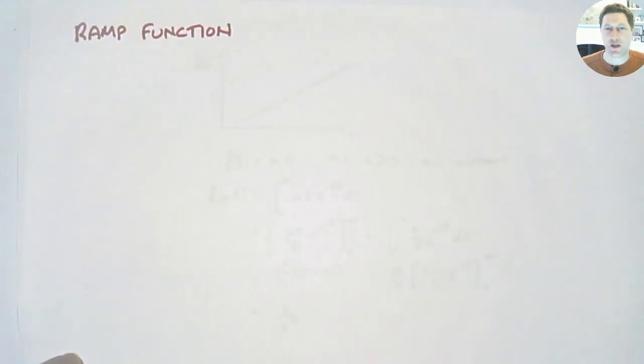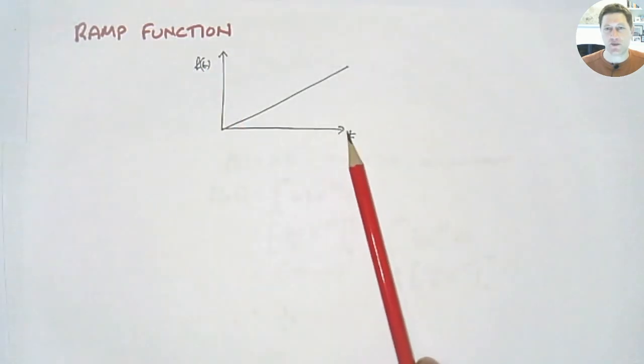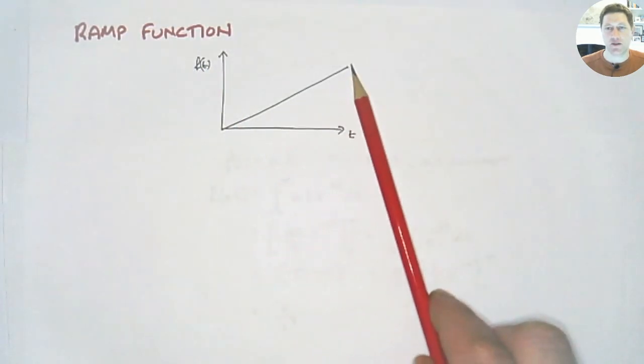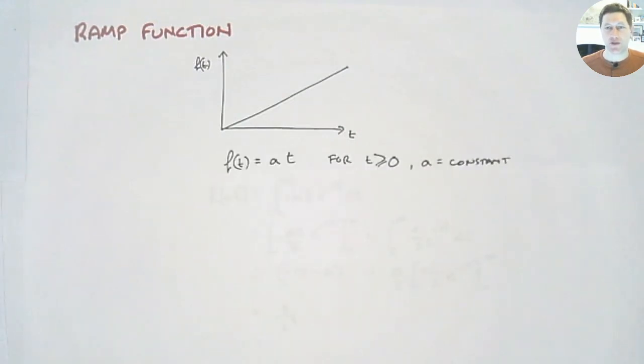This one's called the ramp function. So now we're looking at things that typically might be inputs to a system. So you have your chemical process and you have all sorts of different inputs which are affecting what's happening, how it's behaving. And so this could be a signal or an input which is increasing steadily with time. For example it could be a tank filling up which is then affecting something else in the process. So our function f(t) varies with time and it's a linear increase. Obviously we can write an equation for that f(t) = at where a is the gradient. And this is true for t ≥ 0, a is a constant.